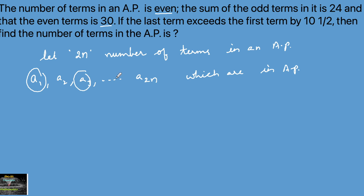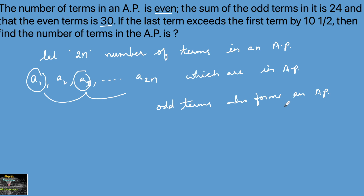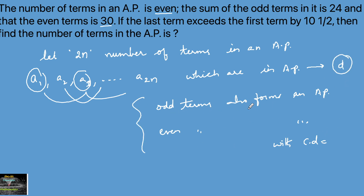The odd terms a1, a3, a5, ... also form an AP. Since a1, a2, a3 are in AP, the odd terms also form an AP, and similarly the even terms a2, a4, ... also form an AP. Both the odd and even subsequences have a common difference equal to 2D.